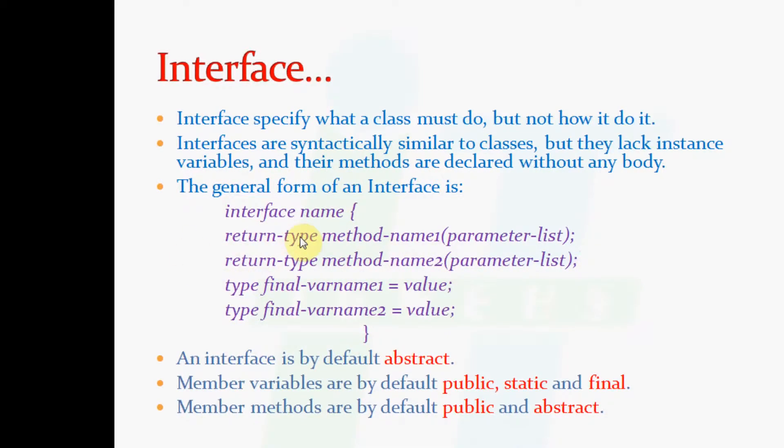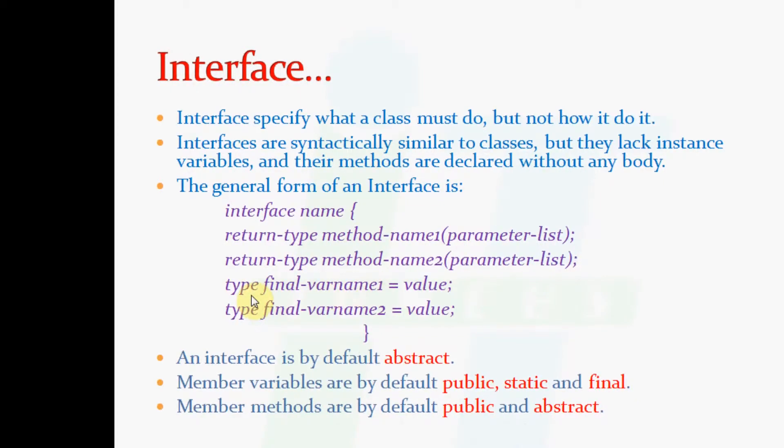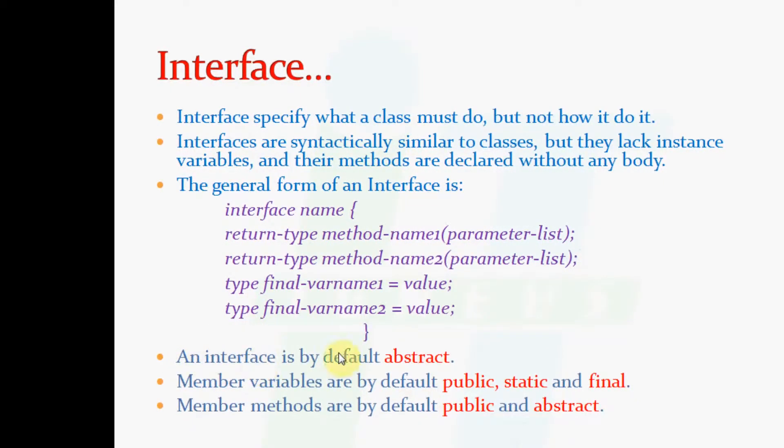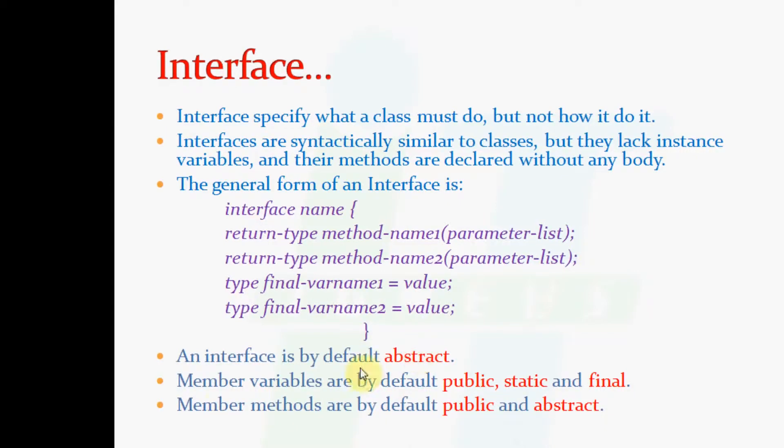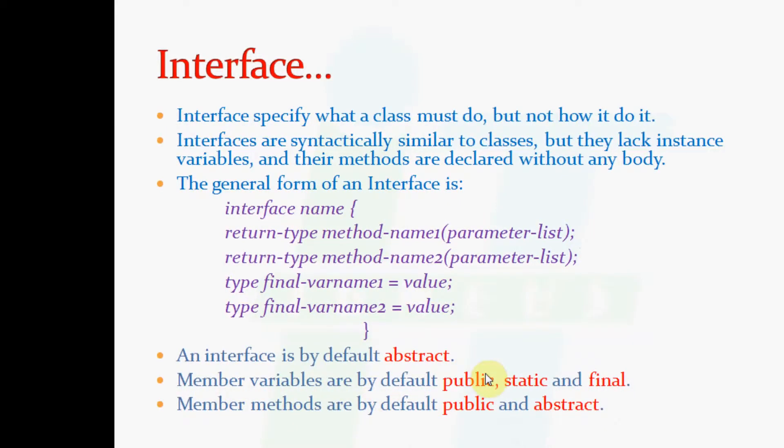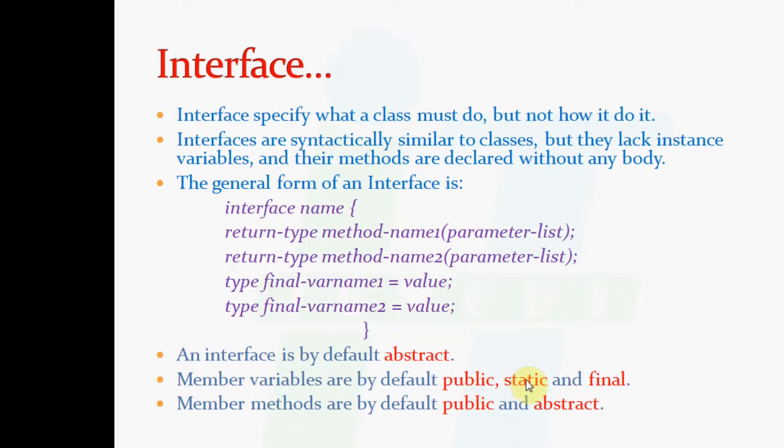methods with their return type and variables which are final. An interface is by default abstract. Member variables are by default public, static and final.